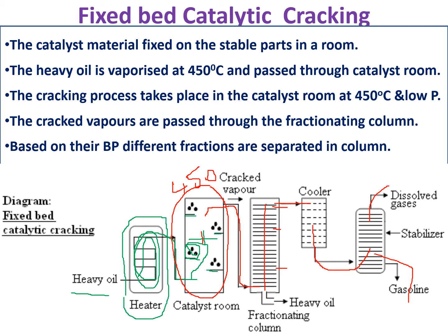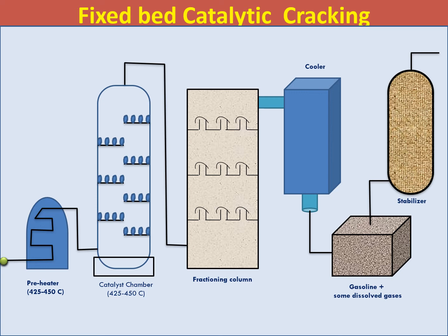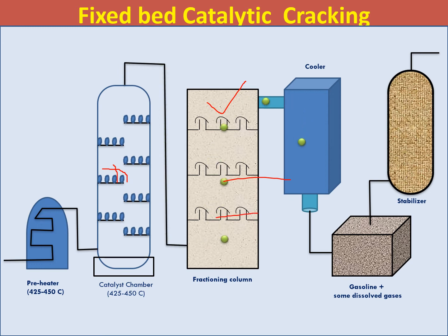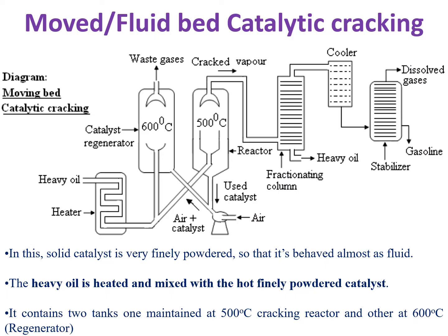The fractional distillation process was already discussed in a previous session — you can go and watch the fractional refining video. The catalyst room is maintained at 450°C, and at this high temperature in the presence of catalyst molecules, the heavy oil vapors are adsorbed and cracked. That is how we obtain products by the catalytic cracking process in a fixed bed manner. The cracked fractions pass to the fractional distillation column, are separated based on boiling points, and our petrol is taken to the cooler and stabilizer to finally obtain the product.